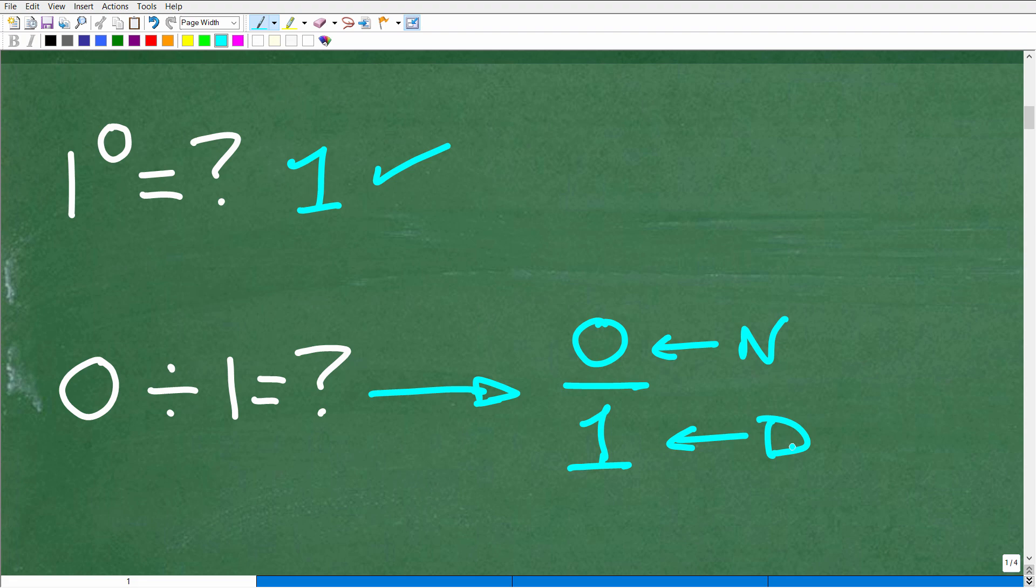So zero is the numerator, and one is the denominator. So now the answer here is zero, but let's change the question a bit here because I think it might be easier to explain. What if I had zero divided by four?